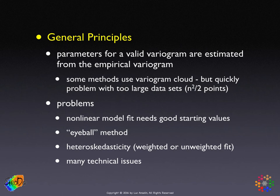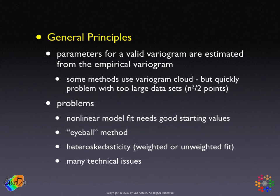For example, with a spherical variogram we need to find three parameters: the sill, the range, and the nugget. So how do we get these three parameters from what is typically a very small number of points in the empirical variogram? There are all kinds of approaches, including eyeball methods where you figure out by eye what is a good fit. But essentially, it's a nonlinear model fit.